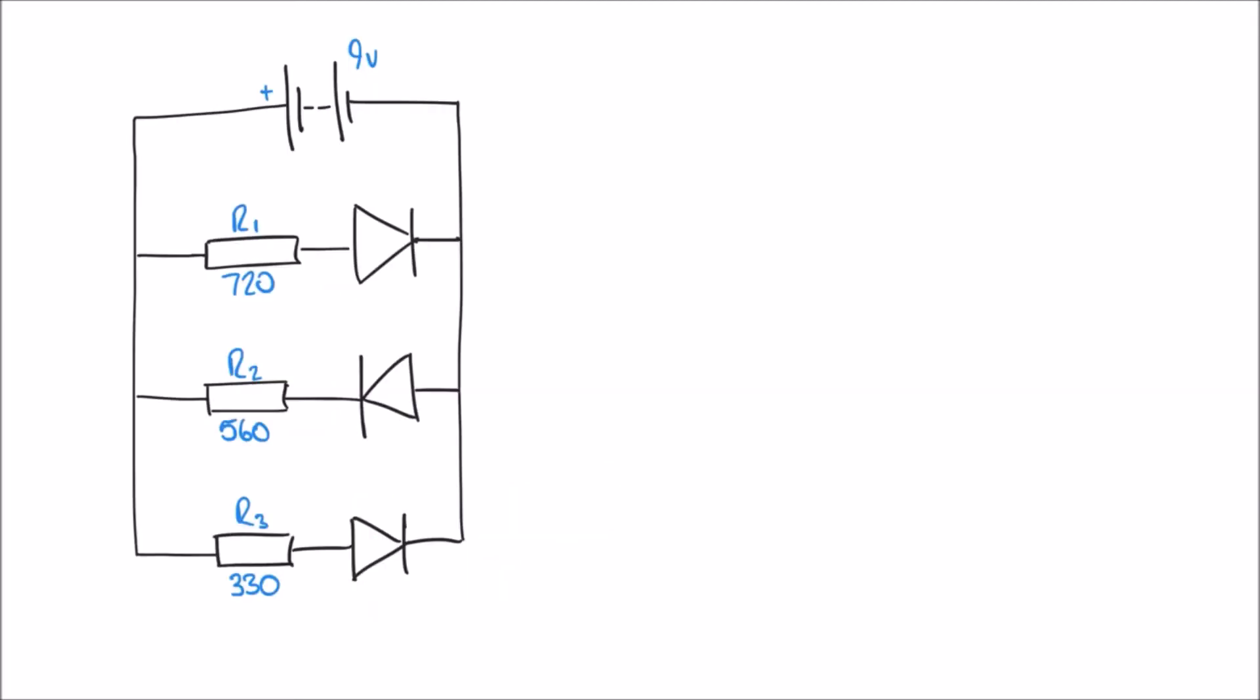Let's have a look at a similar example to the sort of question we looked at in the previous video. We can see here we've got a parallel arrangement of three resistors, each connected in series to a diode. Some of those diodes are in forward bias and some are in reverse bias. The first thing we need to do is look at which of these current branches are going to be allowed to flow. I'll label these as I1 flowing through R1, I2, and I3.